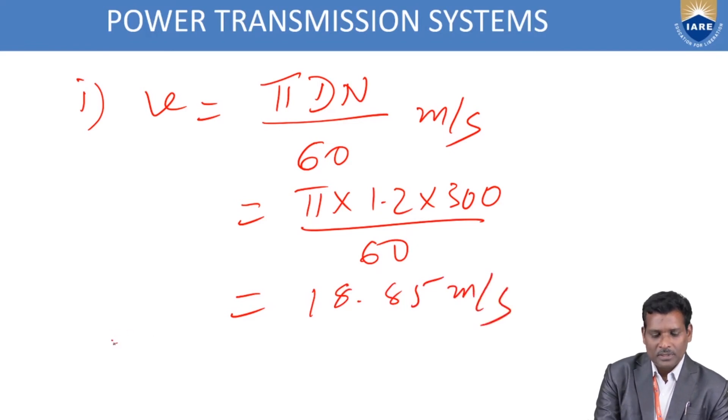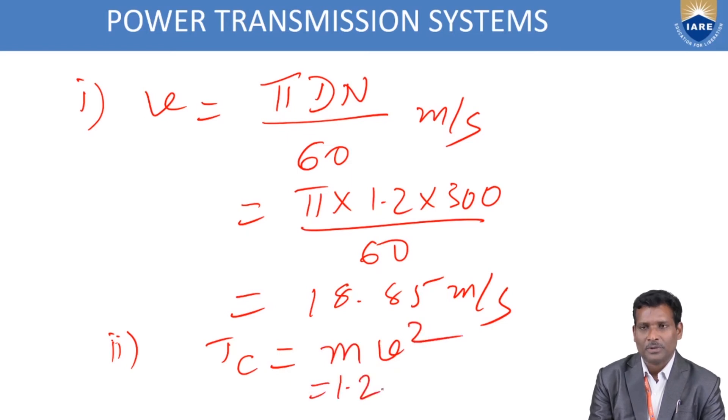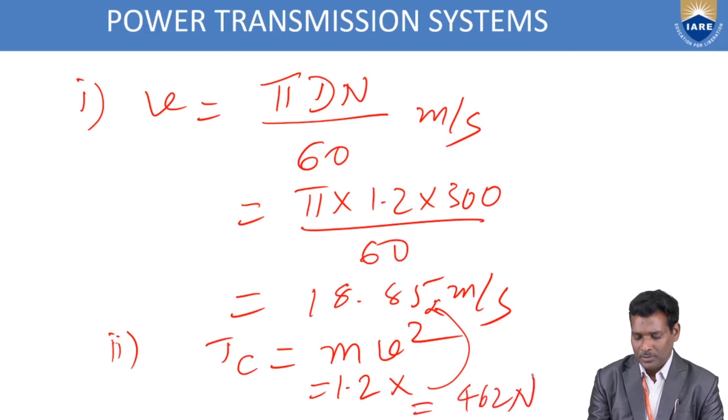Similarly, calculate centrifugal tension. Because the mass of rope is given as 1.3 kg per meter, definitely some amount of centrifugal tension acts on this drive. This is mv². Mass is 1.3 kg, and velocity we already calculated. Substitute this. You will get Tc equals 462 N.